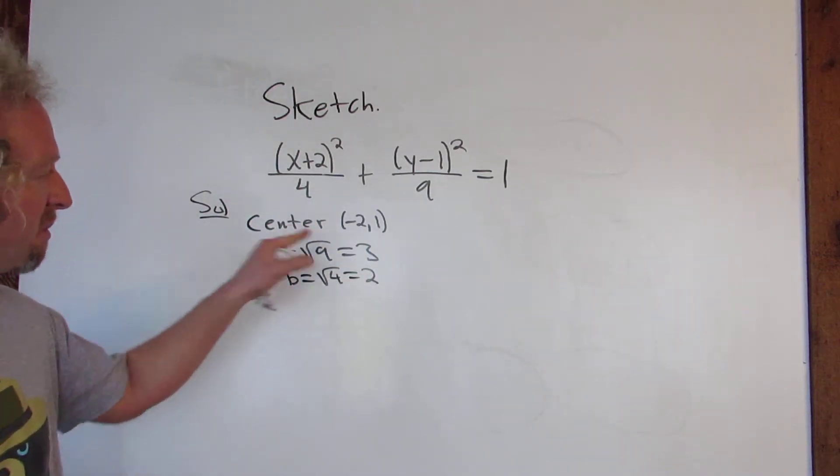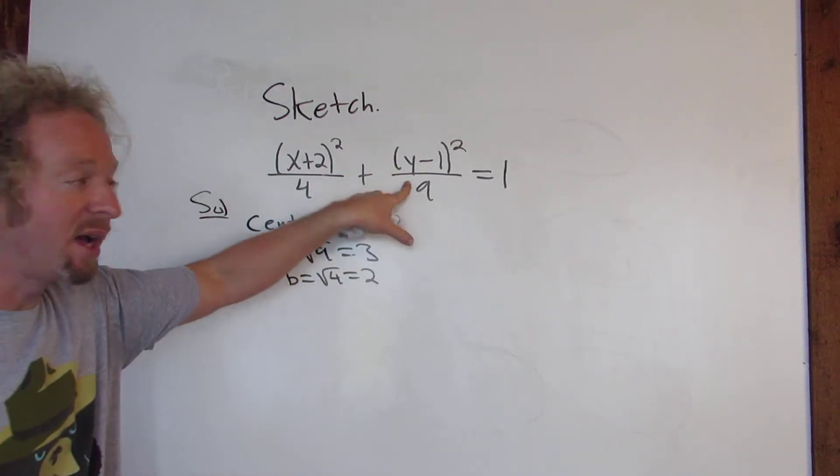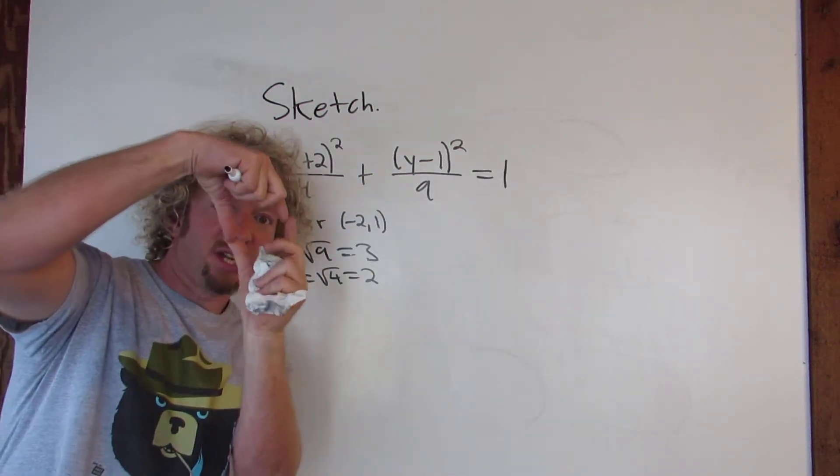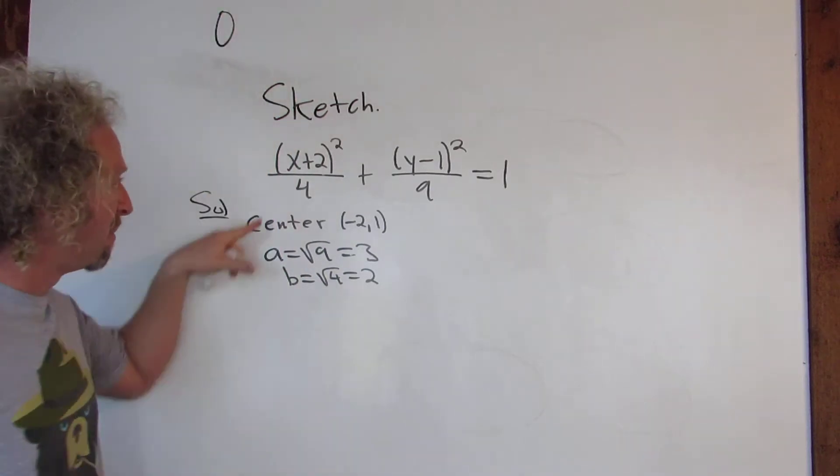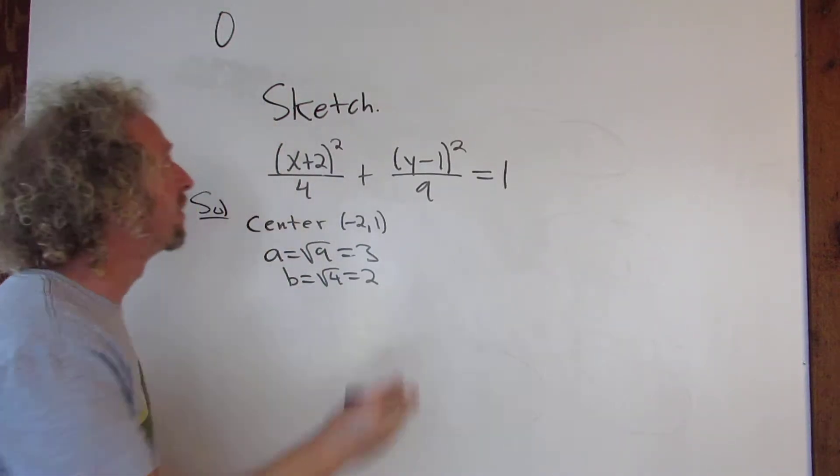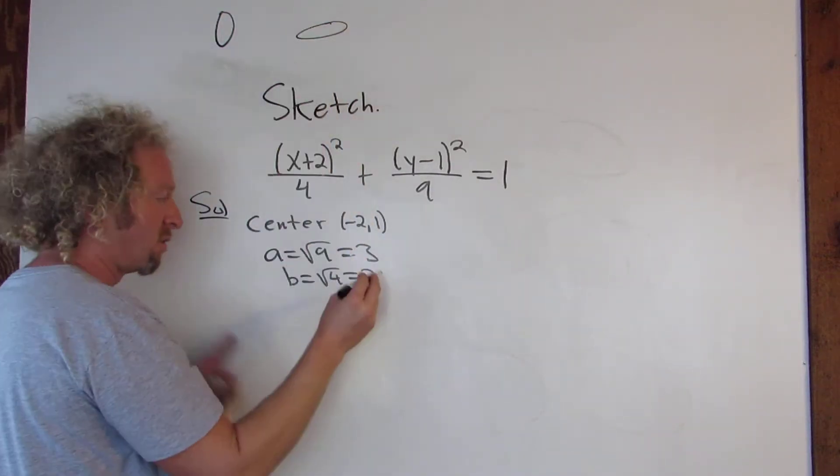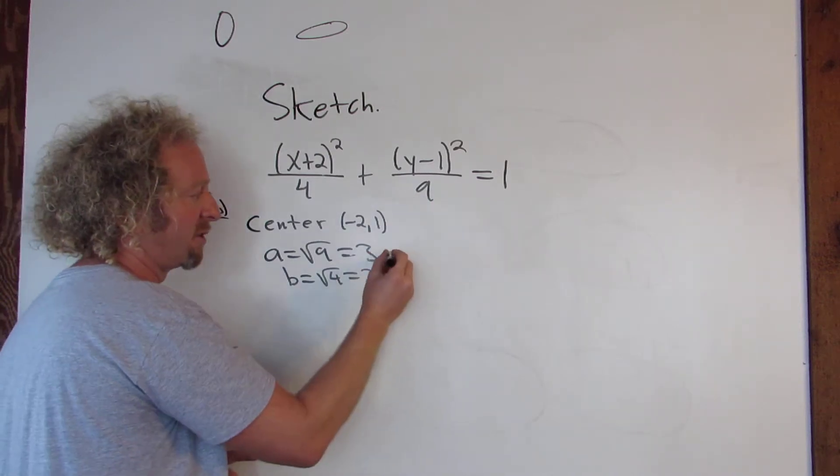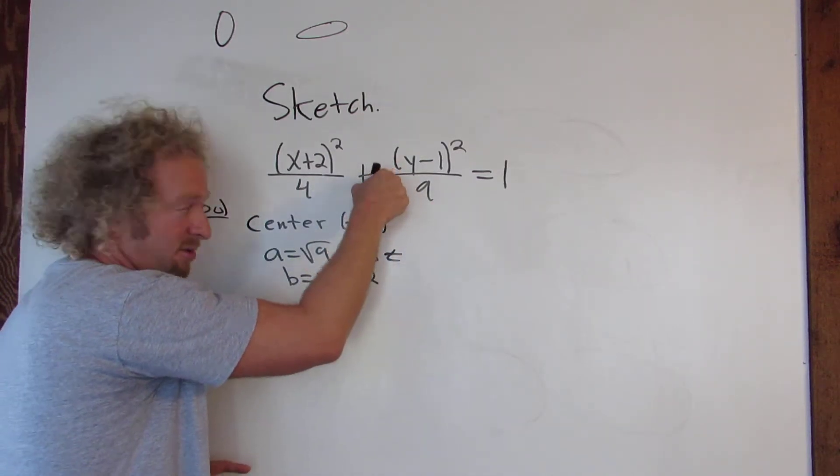Alright, because the bigger number is under the y, it's going to look like this. The major axis is vertical. It's going to look like an egg like this. If the bigger number was under the x, it would look like this. So we know that the major axis is vertical because the bigger number is under the y.